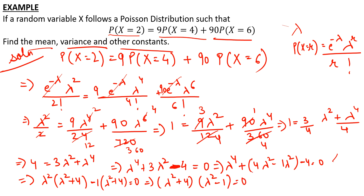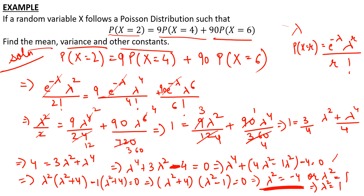From (λ² + 4)(λ² − 1) = 0, we get two cases: λ² = −4 or λ² = 1. Since λ² = −4 is not possible, this implies λ² = 1, and therefore λ = 1.